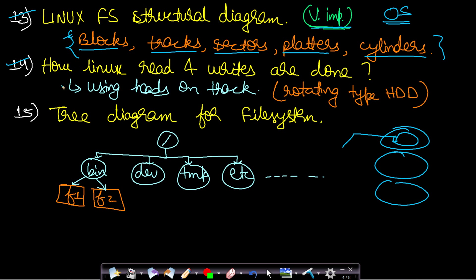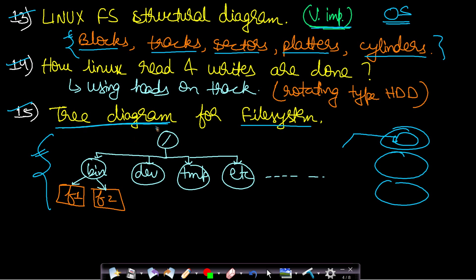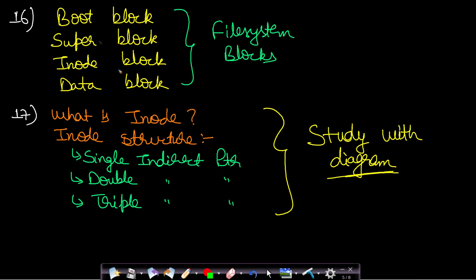The fifteenth topic is the representation of the file system used in Linux, which is a tree diagram. You can find this diagram easily on Google — just search and see it once. This is not very important, but you should know that a tree diagram is the representational diagram for the Linux file system.